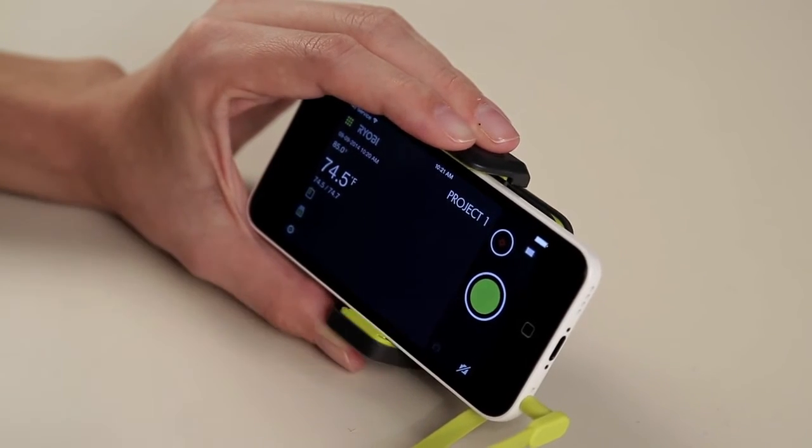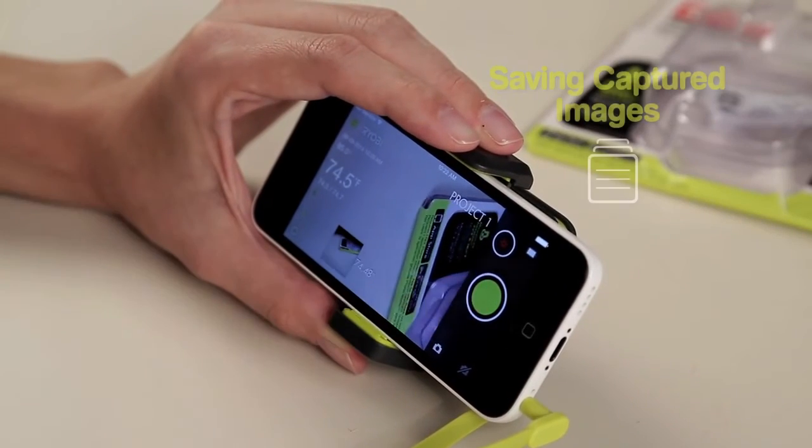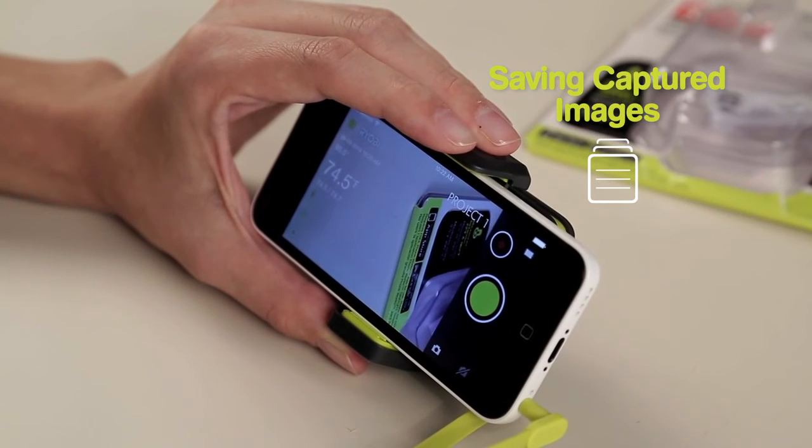To take a picture of the project, make sure that the camera icon is selected, then press the green button on the screen. You can save a captured image by swiping towards the filing cabinet icon.